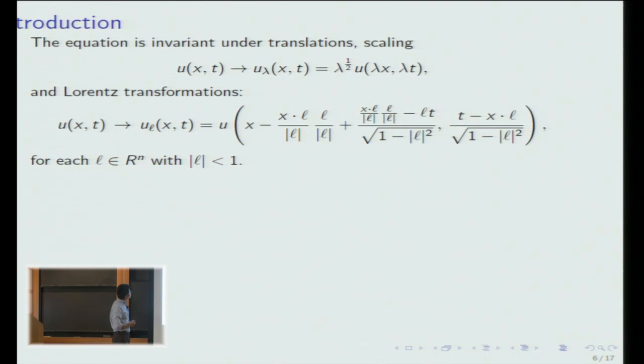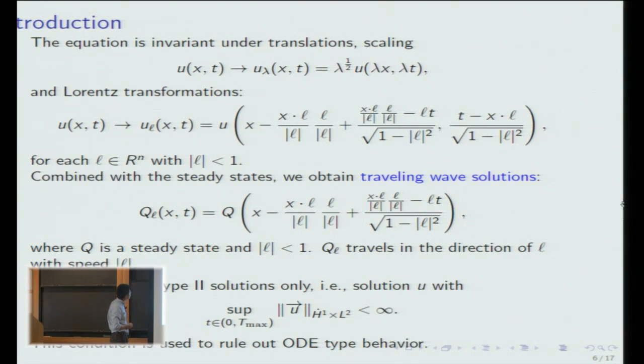So there are infinitely many steady states and the equation is also invariant under many symmetries. It is invariant under the translation and scaling symmetry, but also under Lorentz transformations. So if you combine this Lorentz transformation with the steady states, you get traveling wave solutions. You have a steady state and you apply Lorentz transform to it. Then it becomes traveling. It travels with direction L in the direction of L with speed less than one.